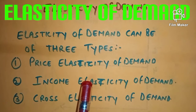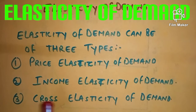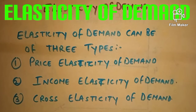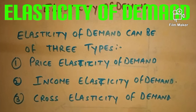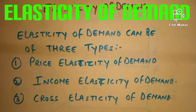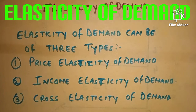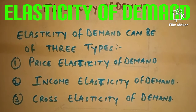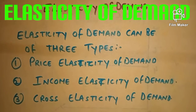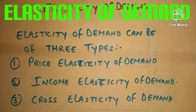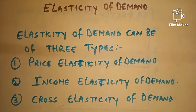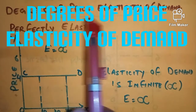Number three is cross elasticity of demand. Cross elasticity of demand means a change in the price of one commodity causes a change in the quantity demanded of another commodity — like in substitute goods, a change in the price of tea brings about a change in the demand for coffee.